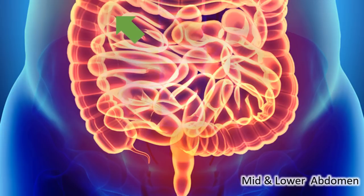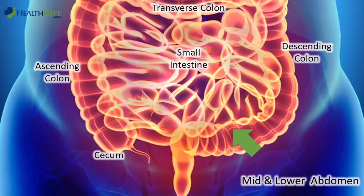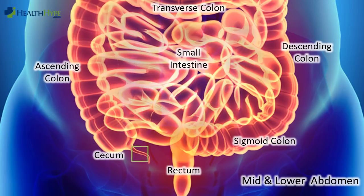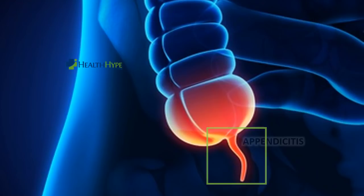Most of the central abdomen is occupied by the coils of the small intestine. This continues into the large intestine, starting from the cecum through the colon and then to the rectum, which is located in the pelvis. One of the important causes of right-sided abdominal pain involves the appendix — an elongated pouch which can become inflamed, causing severe pain in the lower right quadrant. This condition is known as appendicitis and is a medical emergency.